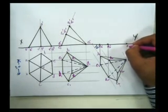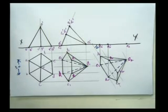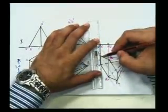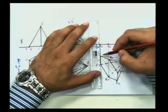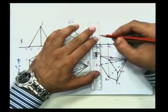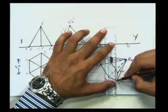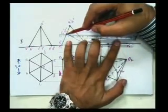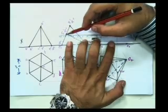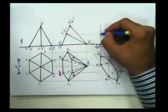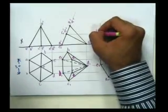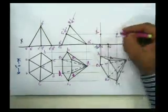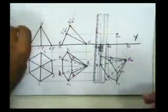And this is O2-dash. The next points I need to extend are F and C. This is F2-dash and C2-dash.